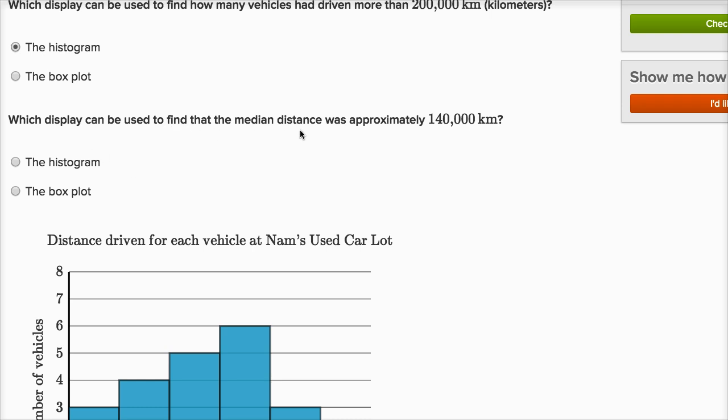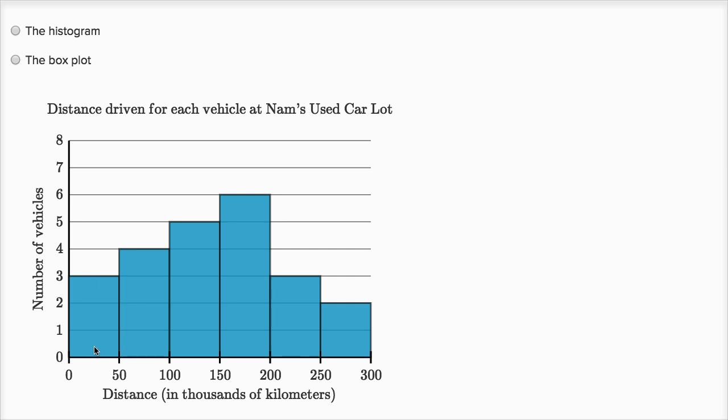Which display can be used to find the median distance, which display can be used to find that the median distance was approximately 140,000 kilometers? Well, to calculate the median, you essentially want to be able to list all of the numbers and then find the middle number. And over here, I can't list all of the numbers. I know that there's three values that are between 0 and 50,000 kilometers, but I don't know what they are. It could be 10,000, 10,000, 10,000, it could be 10,000, 15,000, and 40,000. I don't know what they are. So if I can't list all of these things and put them in order, I really am going to have trouble finding the middle value. The middle value is going to be in this range right around here, but I don't know exactly what it's going to be. The histogram is not useful because it's throwing all the values into these buckets.